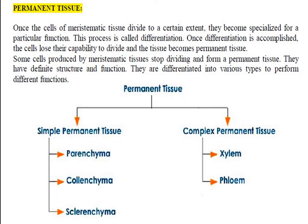When they differentiate, the cells lose their capacity to divide and the tissue becomes permanent tissue. It is then called permanent tissue. So, what are permanent tissues in plants? They are older meristematic tissues. When meristematic tissue becomes specialised for a particular function, that is called differentiation. When the cells become differentiated, they lose the capacity to divide and this tissue becomes permanent tissue.